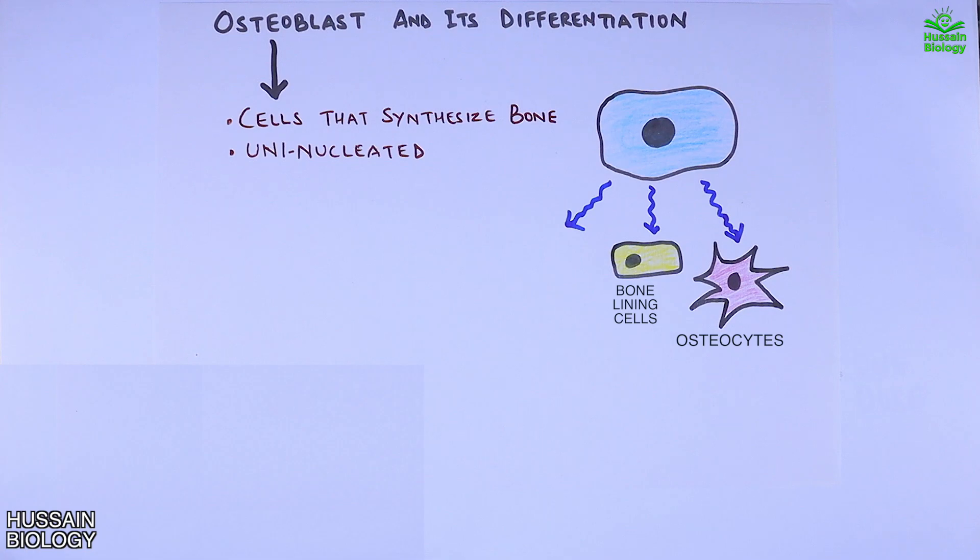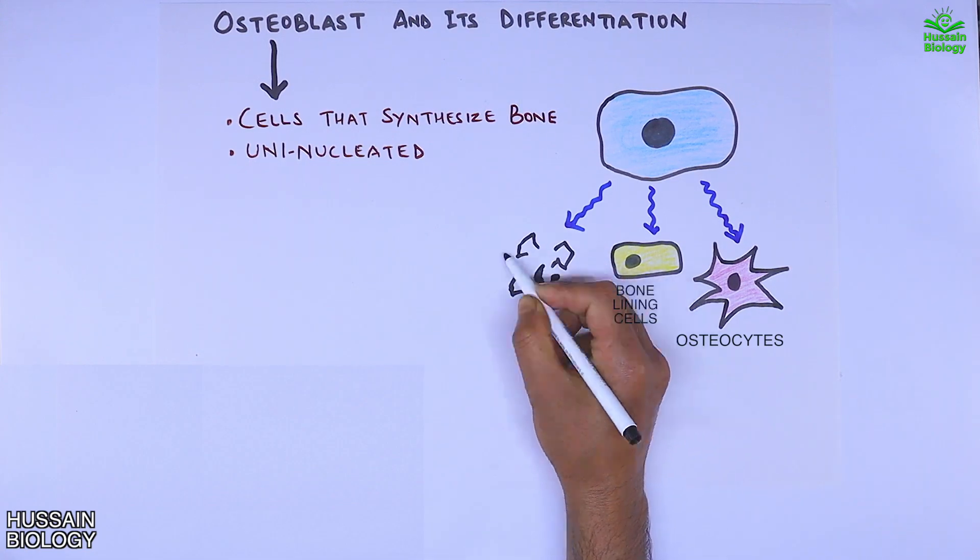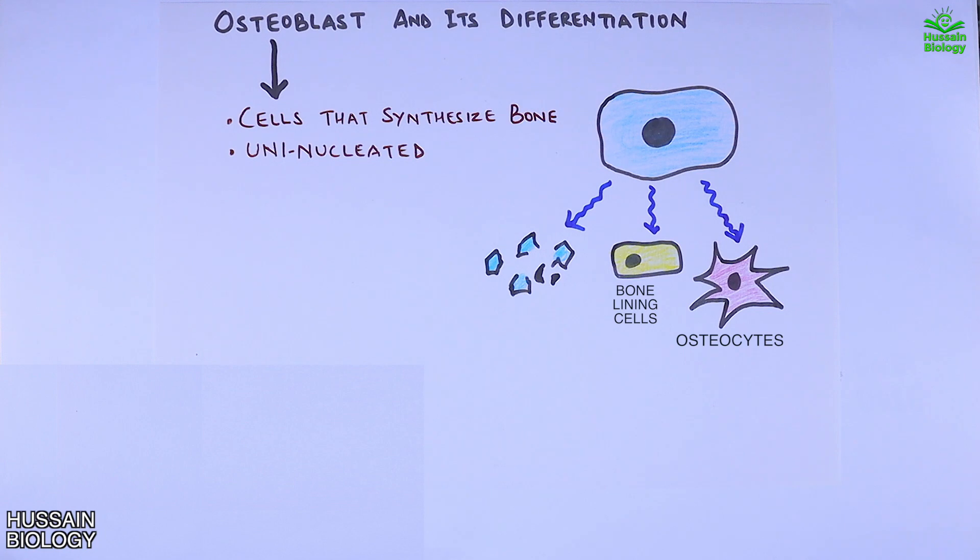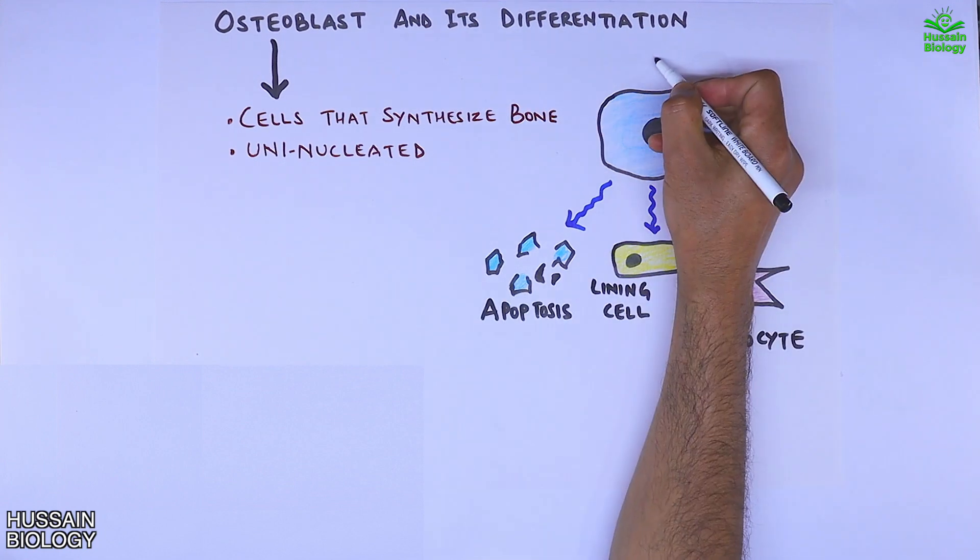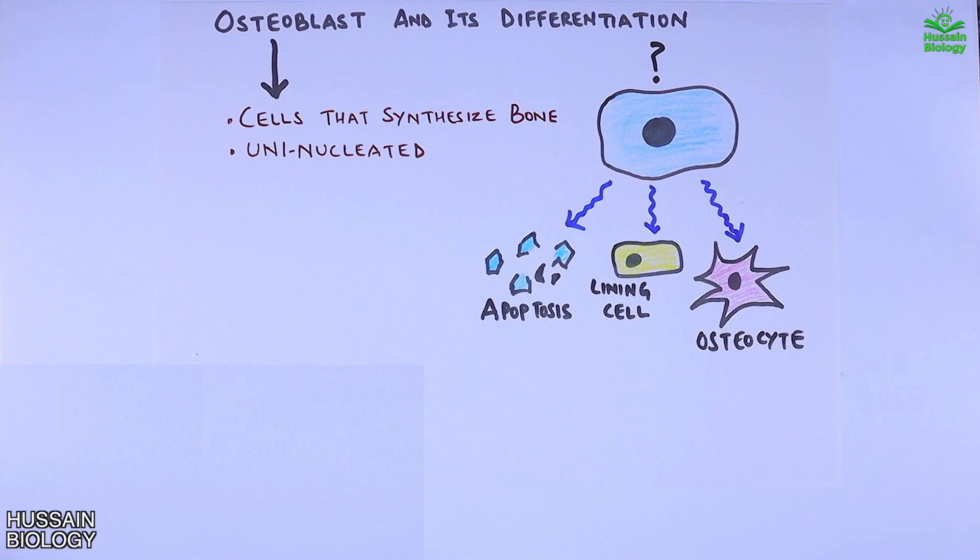If we do not need any osteocytes, the osteoblasts are driven into apoptosis. But where the osteoblasts come from is the topic we are going to explain here.